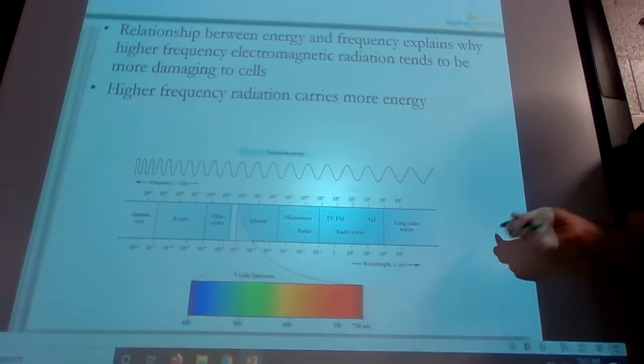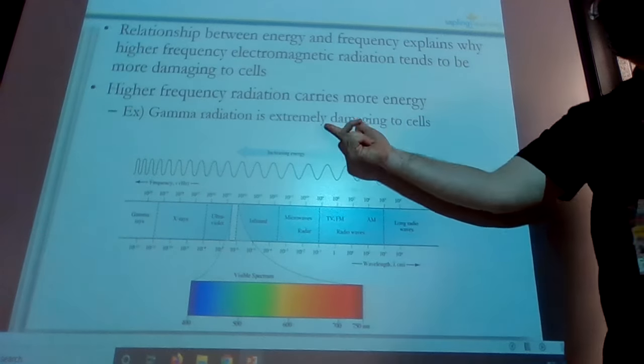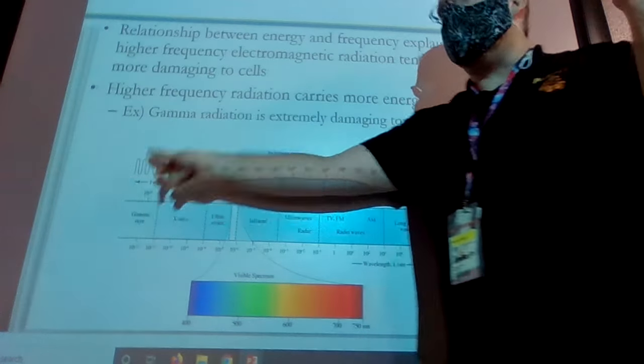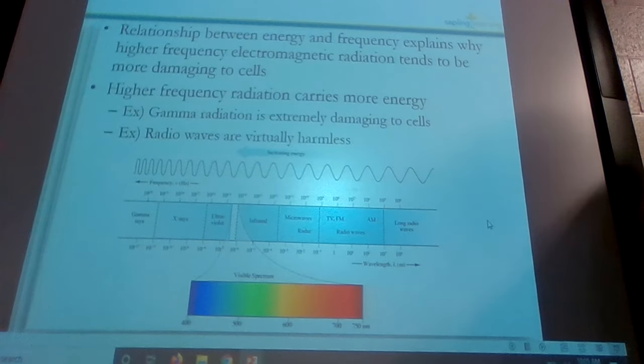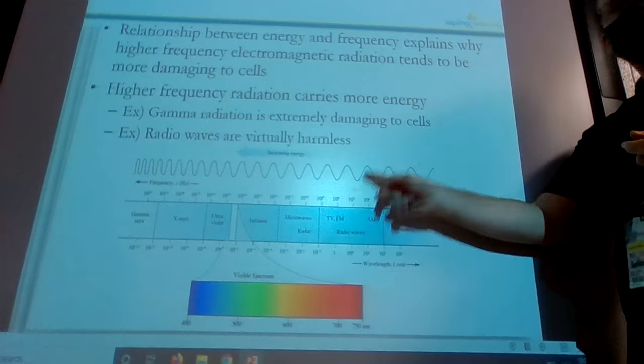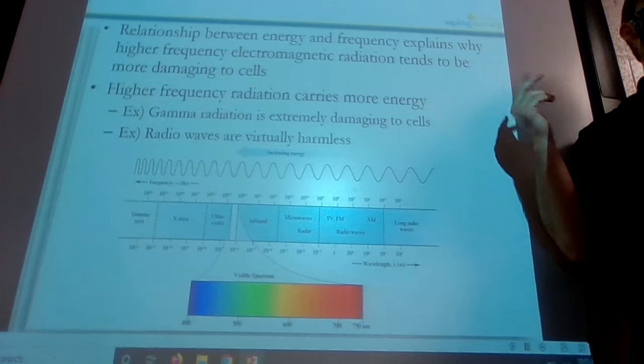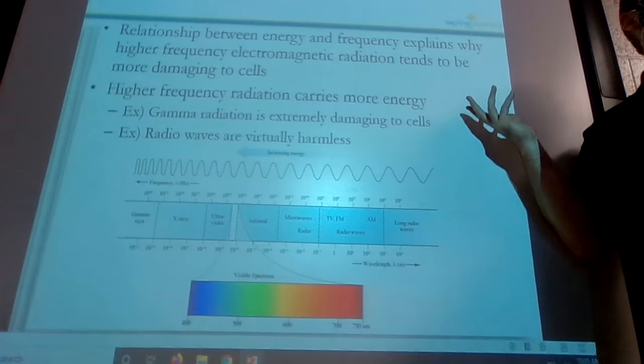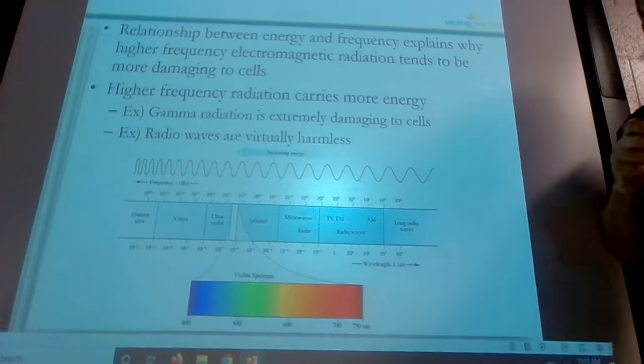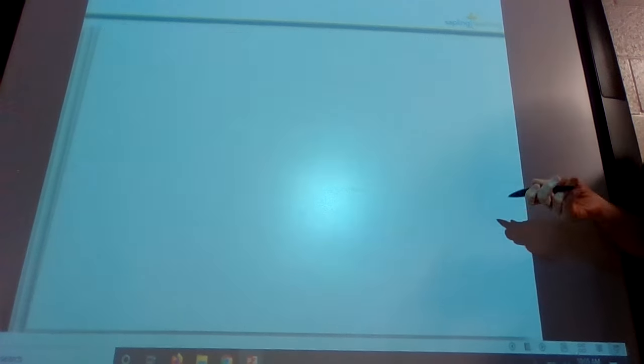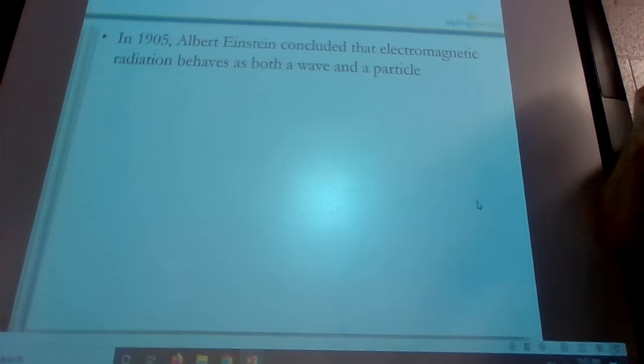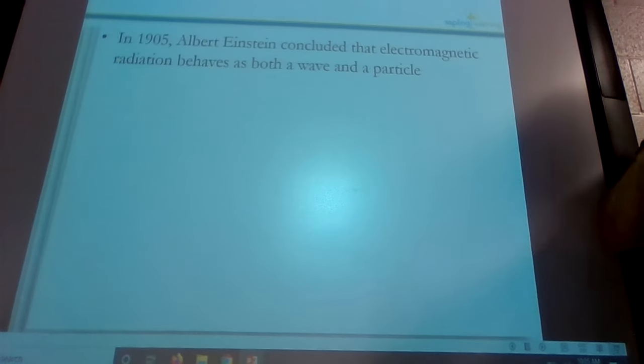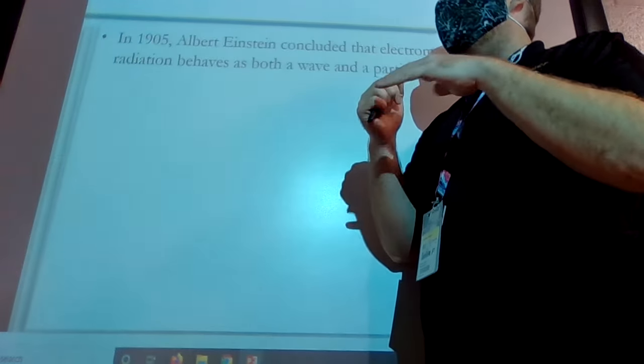So high frequency radiation carries more energy. Gamma radiation is extremely damaging to your cells. And it's also the highest frequency that we have in the electromagnetic spectrum. Radio waves are down here towards the end. They're virtually harmless. Literally, there's radio waves bouncing around this room right now all over us. And we don't care. It's not going to hurt us. Even over an entire lifetime of radio waves being everywhere, it's not a big deal. Very low energy. Probably don't even penetrate your skin. Where gamma rays would like go through the wall into the next room and like penetrate into your organs. Gamma rays are pretty bad.